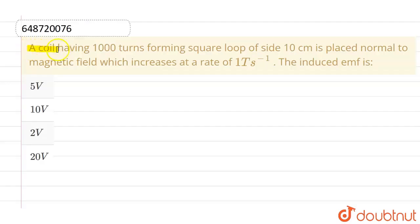If we talk about this question, this given question is: a coil having 1000 turns forming square loop of side 10 centimeter is placed normal to magnetic field which increases at a rate of 1 tesla per second. The induced emf is...